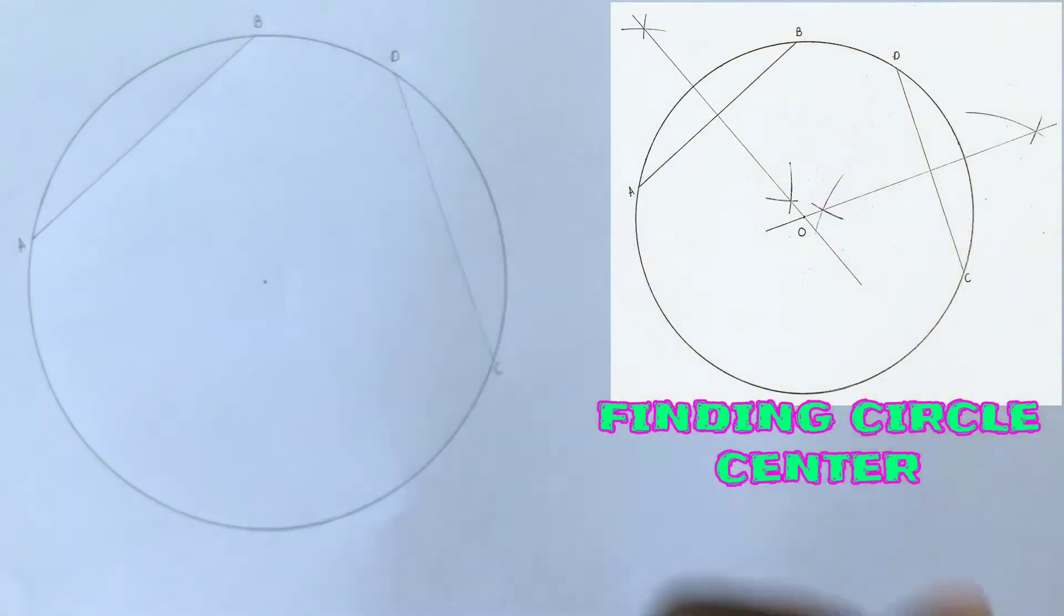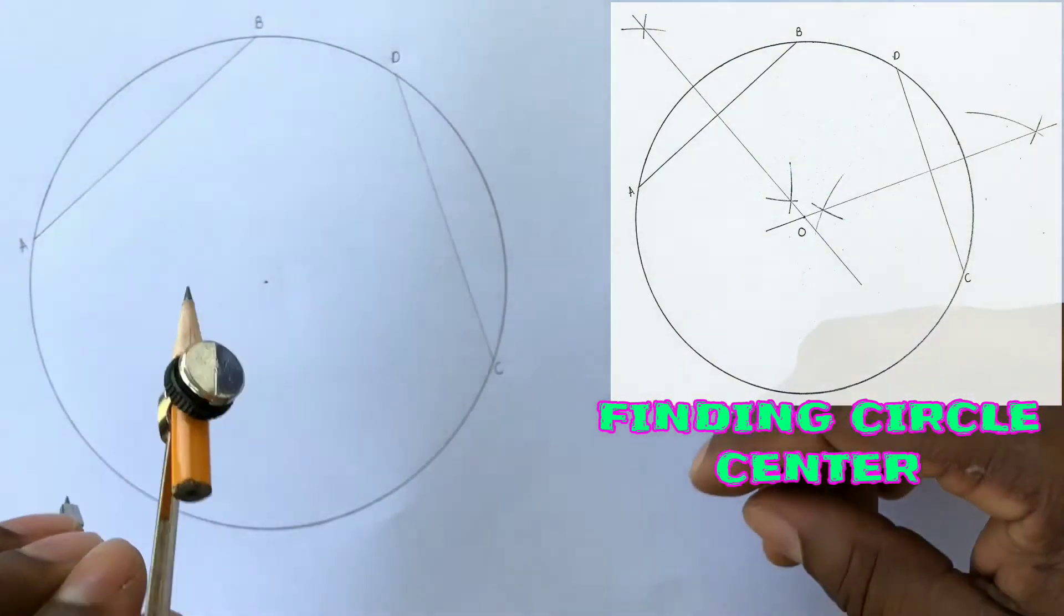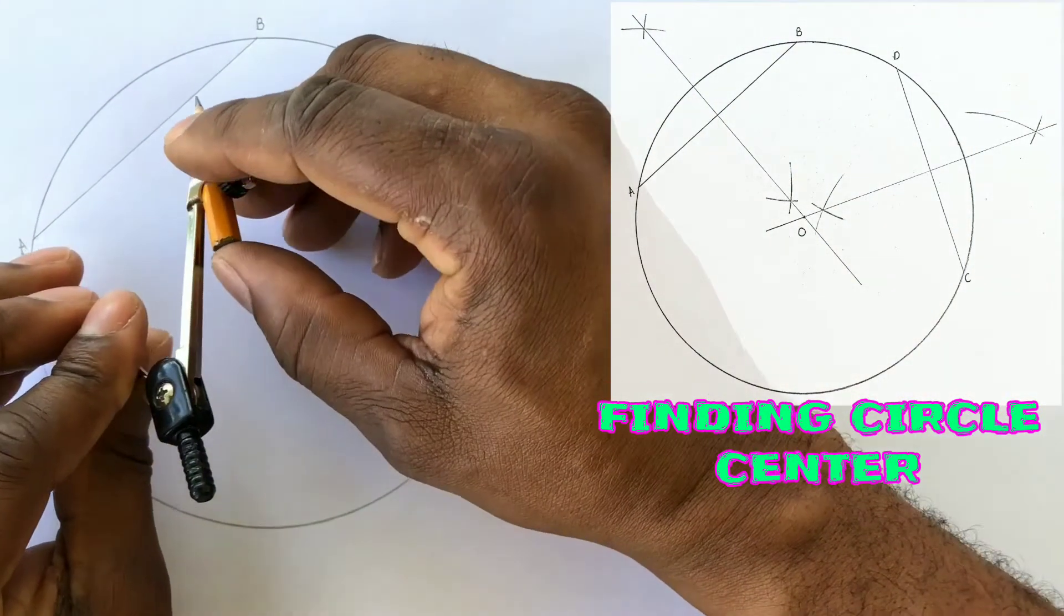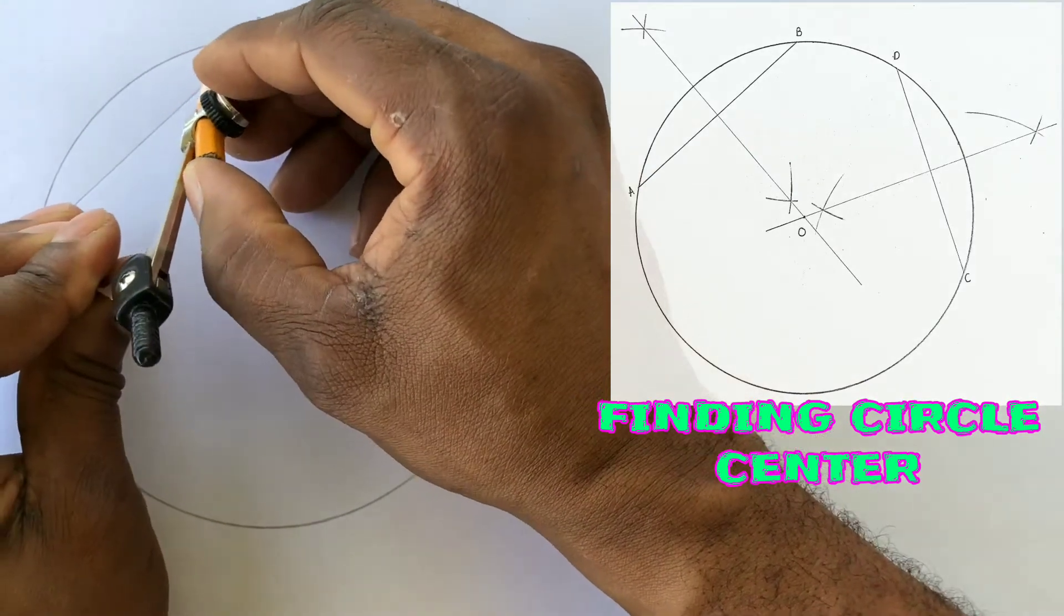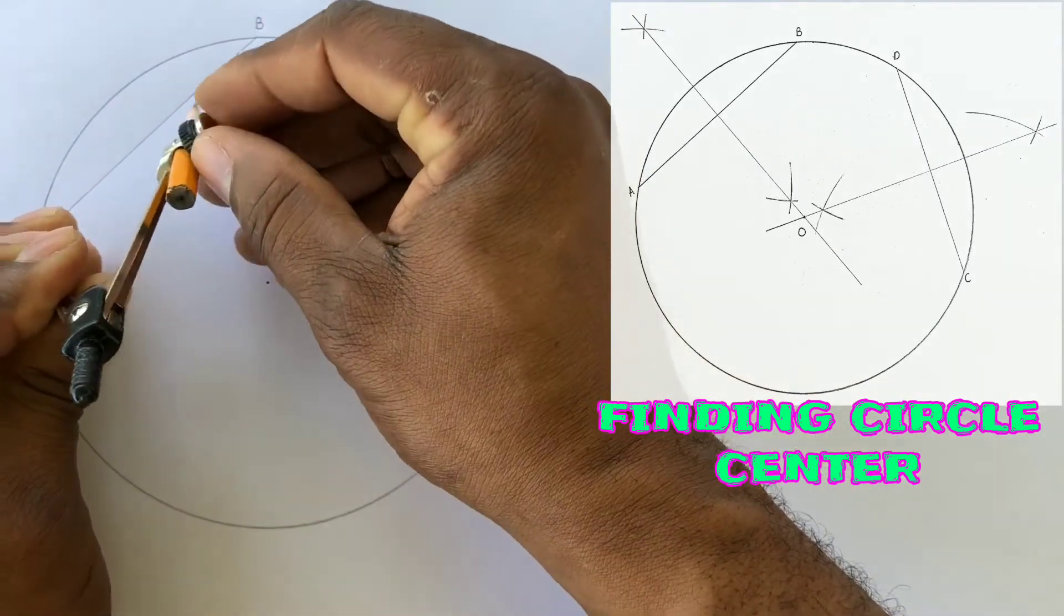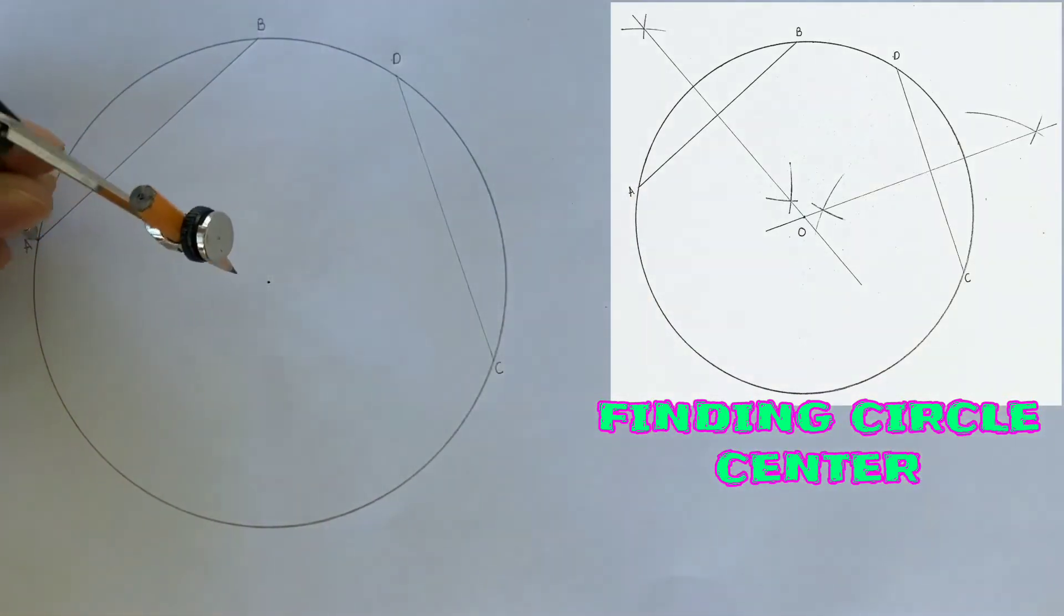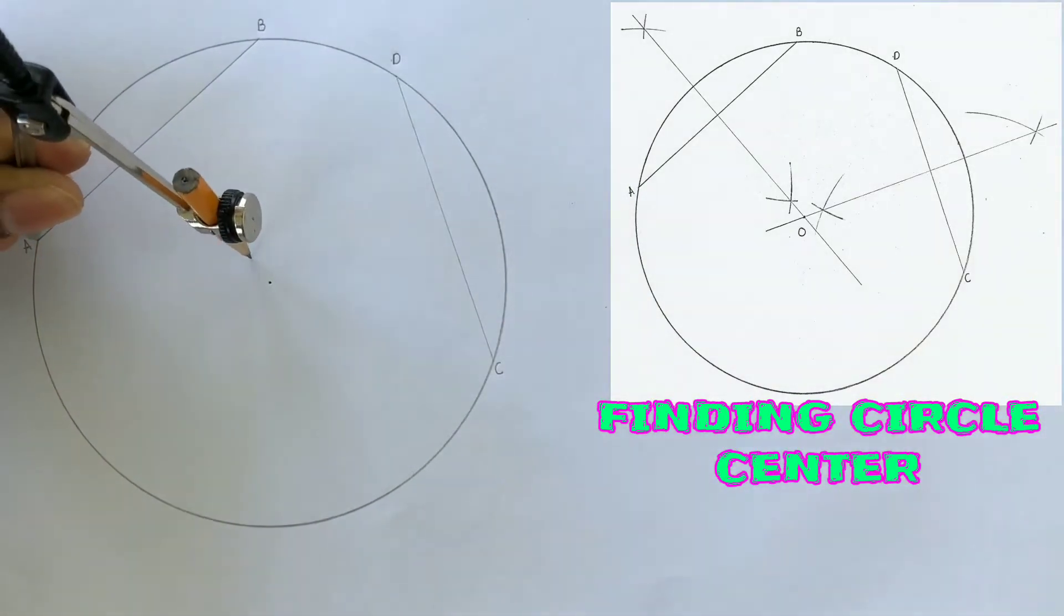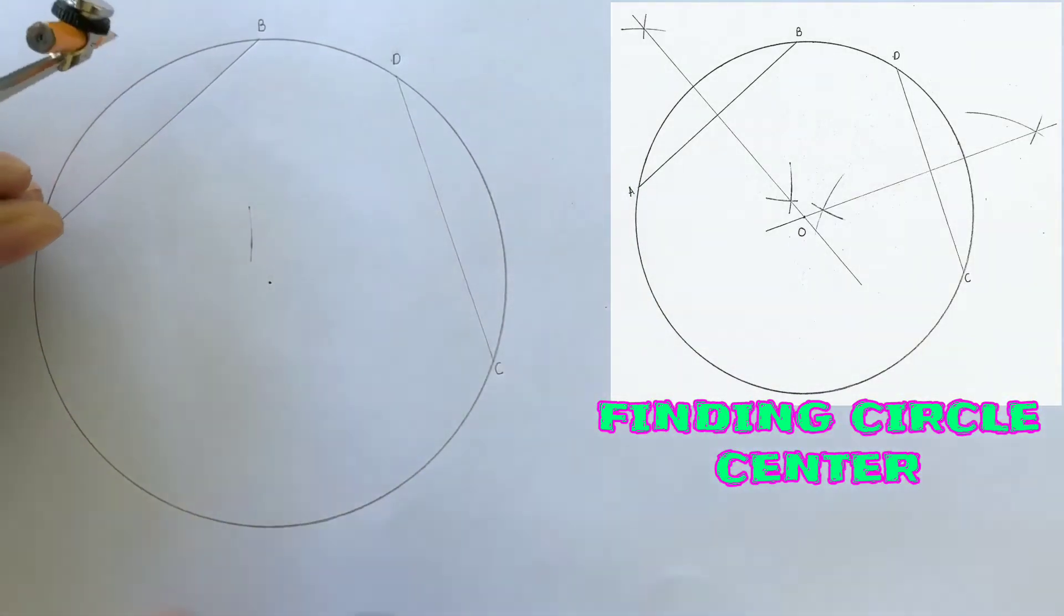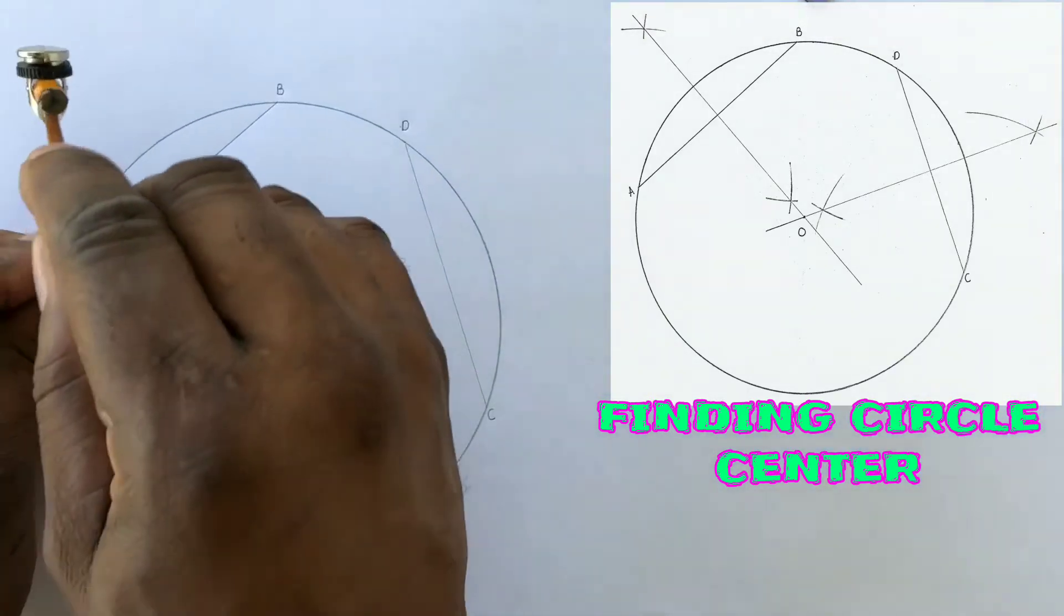You will now bisect the two chords A B and C D. To bisect a chord, open your compass to more than half the length of the chord and scribe intersecting arcs from both ends of the chord above and below the chord.